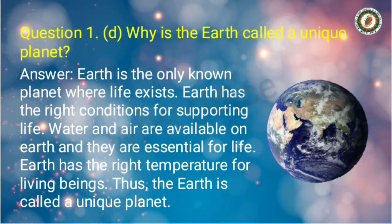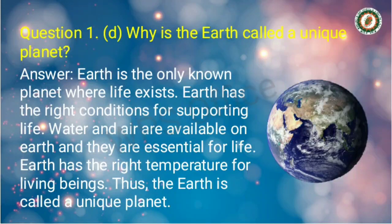Question number 1d: Why is the Earth called a unique planet? Earth is the only known planet where life exists. Earth has the right conditions for supporting life. Water and air are available on Earth and they are essential for life. Earth has the right temperature for living beings. Thus, Earth is called a unique planet.